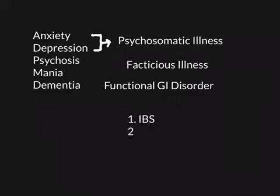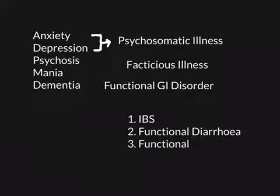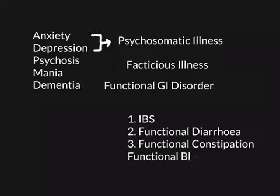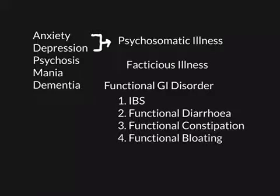The four main functional gastrointestinal disorders are: IBS — the most famous by far, though potentially not the most common; functional diarrhoea; functional constipation; and functional bloating. Some of the others are even more common than IBS but are often just diagnosed as IBS.